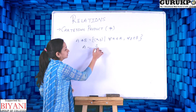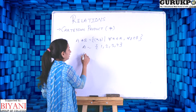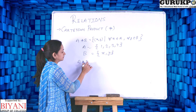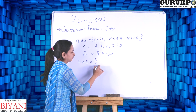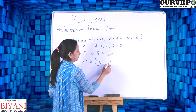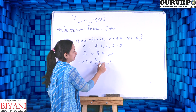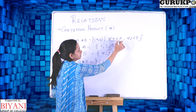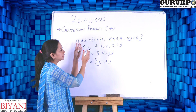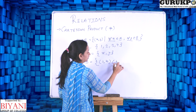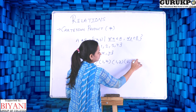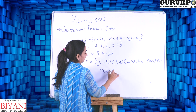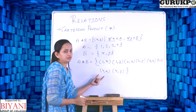Let me take an example. If I have set A = {1, 2, 3, 4} and set B = {x, y} and I have to find the Cartesian product A×B, I will make a set in which every element is a pair — first element from set A and second element from set B. So the Cartesian product equals {(1,x), (1,y), (2,x), (2,y), (3,x), (3,y), (4,x), (4,y)}. This set is called the Cartesian product.